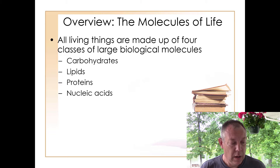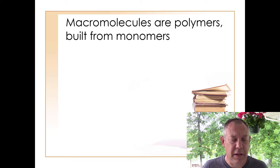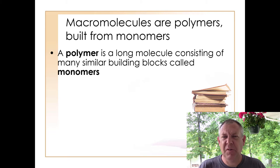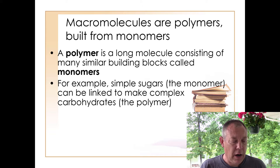Before we talk about specific classes, let's talk about biological macromolecules in general. Biological molecules tend to be very big and are made up of building blocks called monomers. Monomers are put together to make a polymer — the small monomer is the building block, and when you put a bunch together it's called a polymer, a big macromolecule. For each class we'll learn what the monomer is and how monomers are assembled into the polymer.